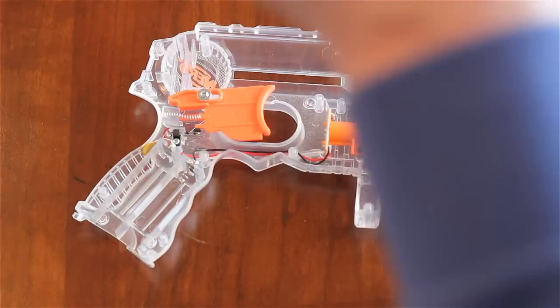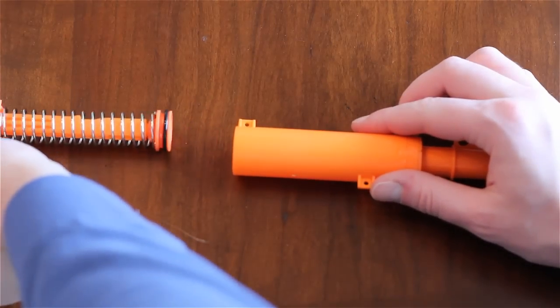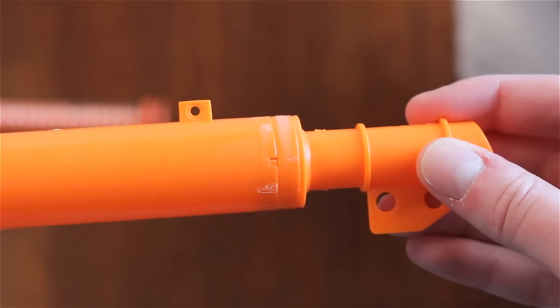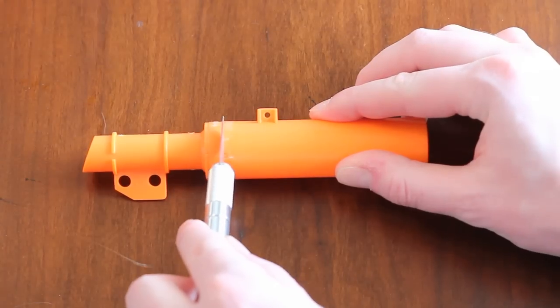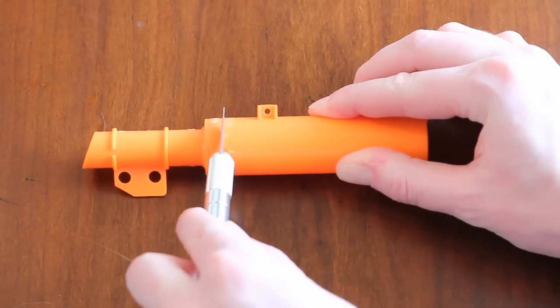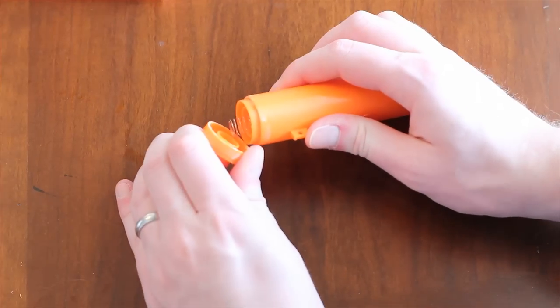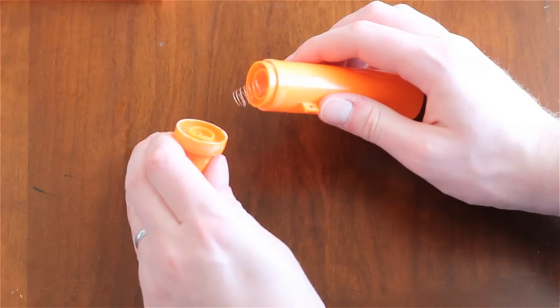Carefully remove the barrel, then remove the plunger and check out our new problem. After my first video Nerf thought they could outsmart us by gluing the barrel together. Be super careful and weaken the glue seal with a blade. Then snap it for a clean break because it doesn't matter!